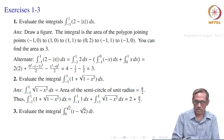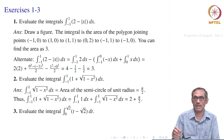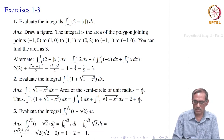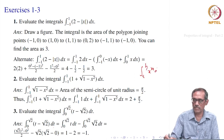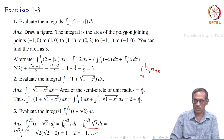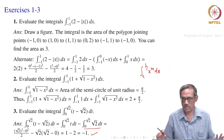The last problem: evaluate ∫₀^√2 (t − √2) dt. Whether the variable is t or x the integral is the same. We break it up: ∫₀^√2 t dt − ∫₀^√2 √2 dt = [(√2)² − 0²]/2 − √2·(√2 − 0) = 2/2 − 2 = 1 − 2 = −1. Let us stop here today.